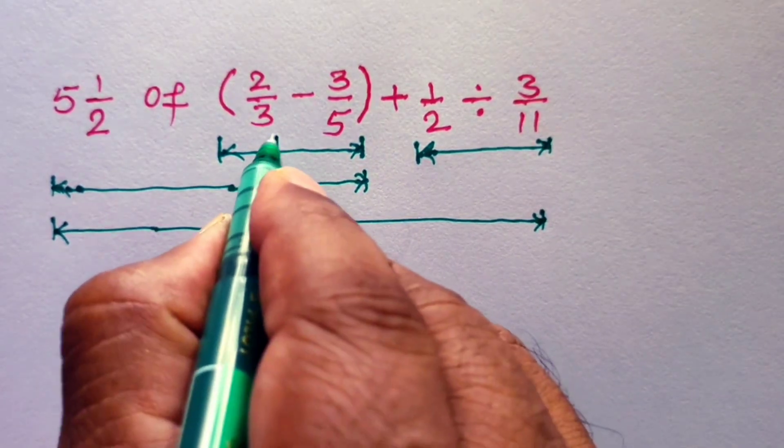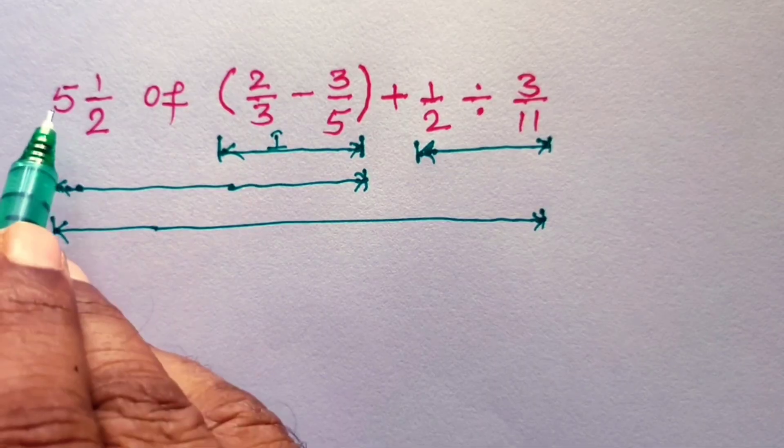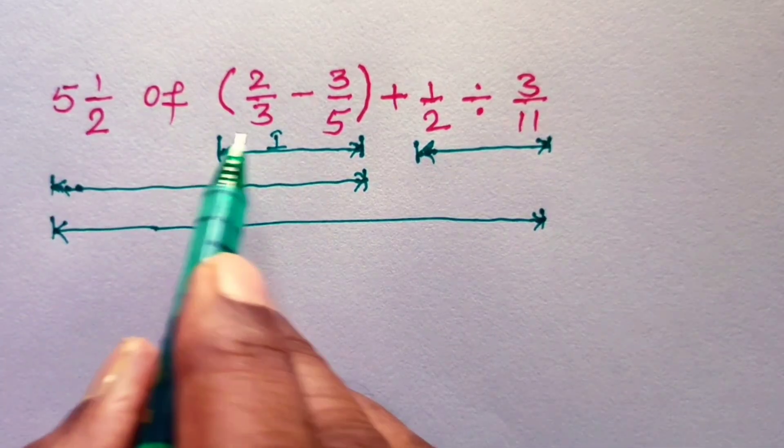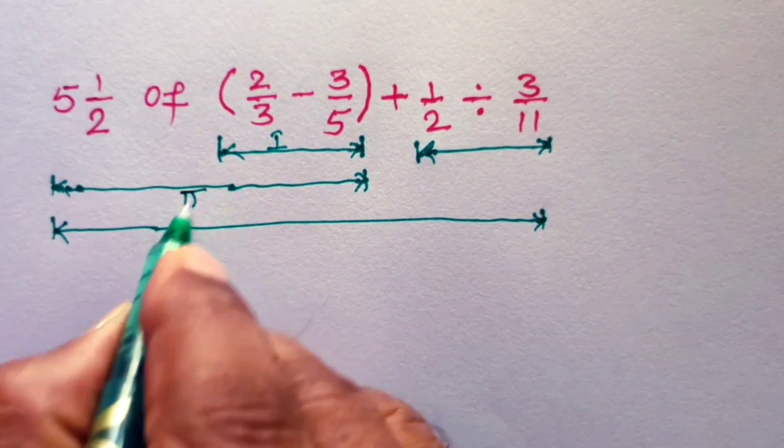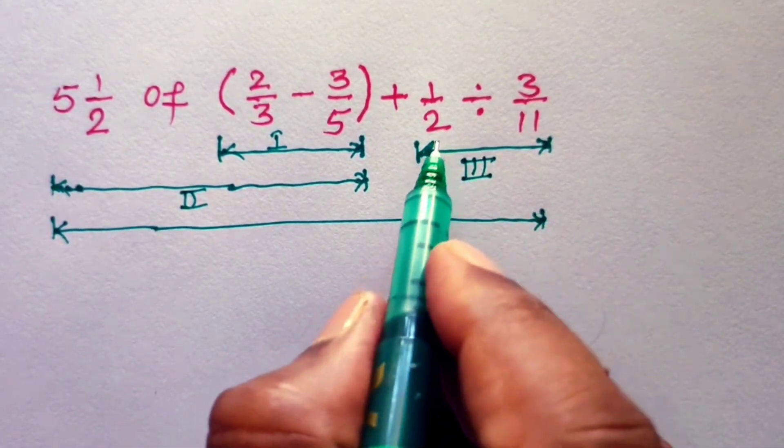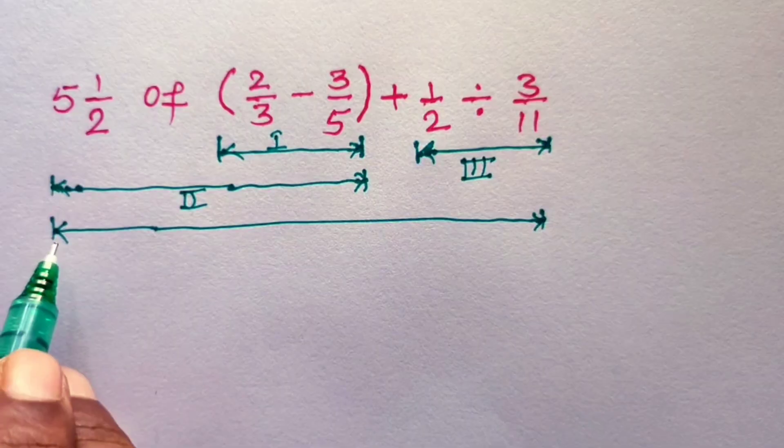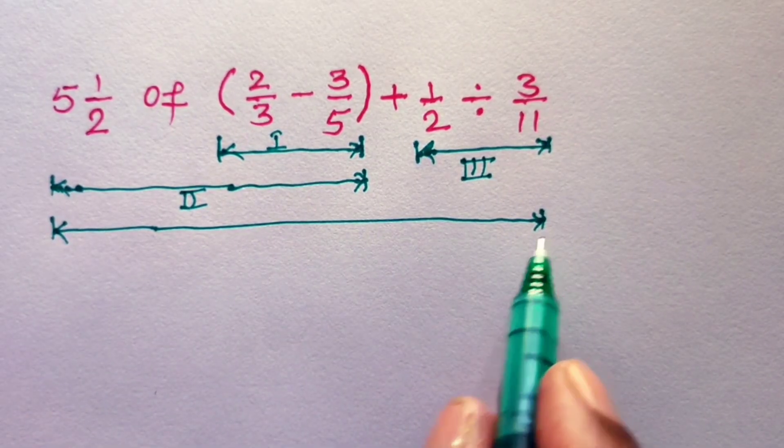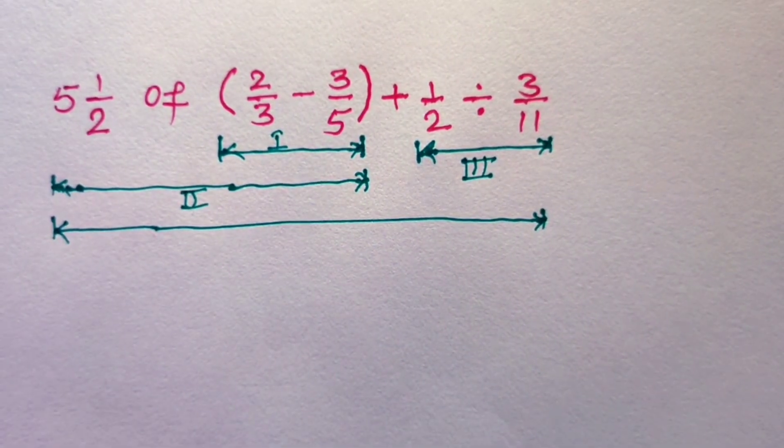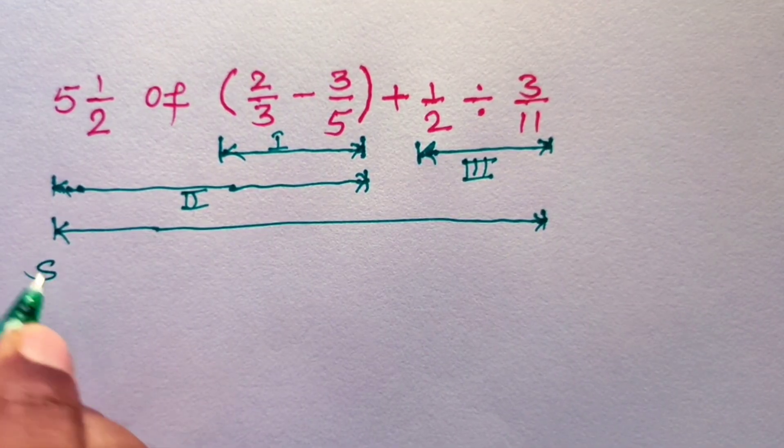Step number 1 is to find the value of this bracket. Step number 2, 5 and half of this bracket. Step number 3 is half divided by 3/11. And step number 4 is this whole mathematical expression. Now we can solve this sum step by step. So, solution for this.